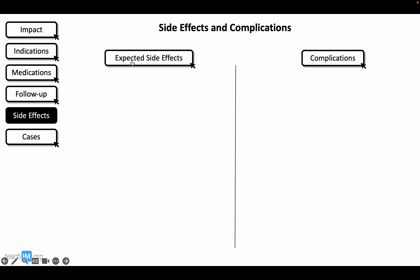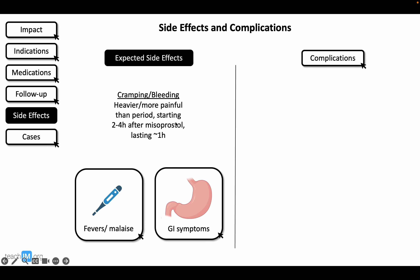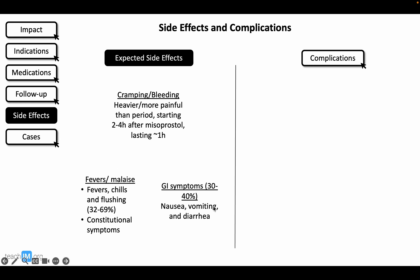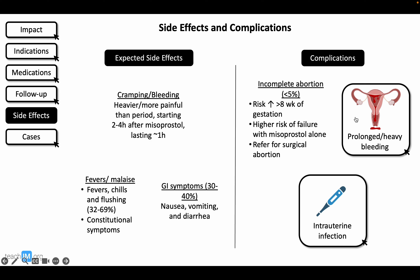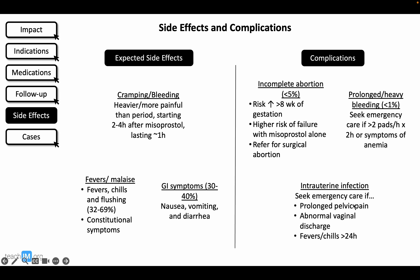Expected side effects are severe cramping and bleeding that are heavier than menses, fever, chills, nausea, vomiting, and diarrhea. Complications include incomplete abortion, which is higher after 8 weeks gestation and when misoprostol is used alone. Other rare complications include prolonged heavy bleeding and intrauterine infection.